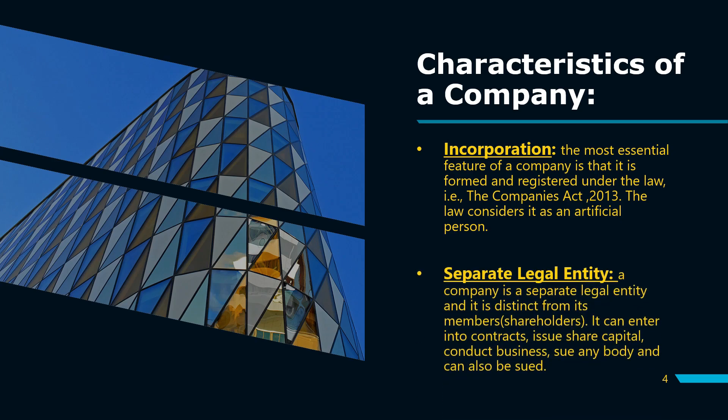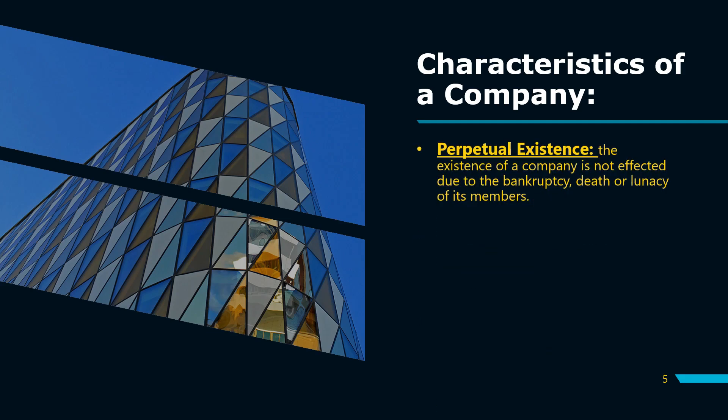Next is separate legal entity — iske baare mein baat already kar chuke hain. A company aur uske jo members hote hain unki alag alag identity hoti hai, and in the eyes of the law a company an artificial person hoti hai. Kehani ka matlab ye hai: company apne naam se business start kar sakti hai, kisi bhi contract mein enter kar sakti hai, kisi ko bhi sue kar sakti hai aur kisi ke through sue ho bhi sakti hai — that's what separate legal entity means.